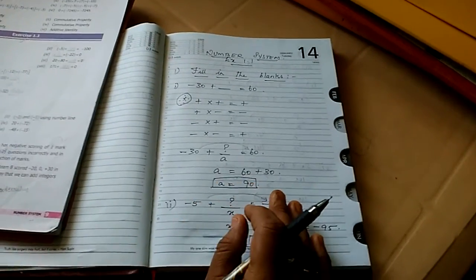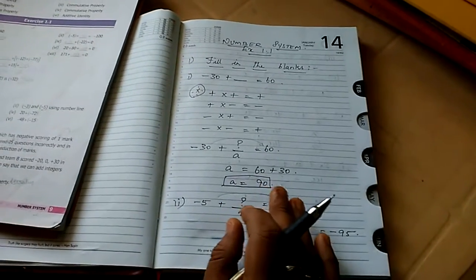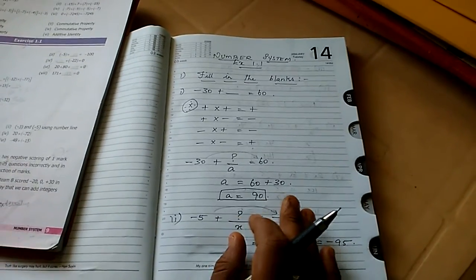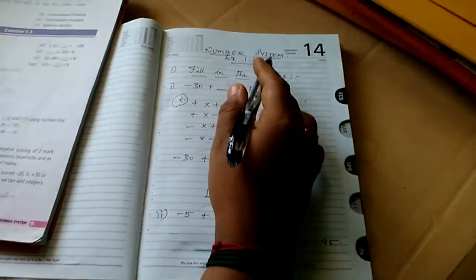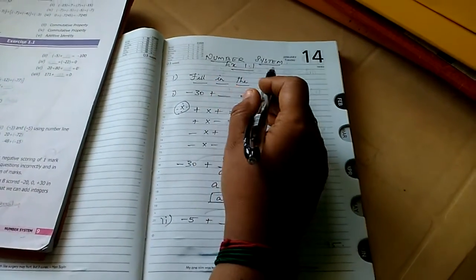Hi children, welcome to our channel. Now we are going to see the Metric syllabus, which is Class 7. So what is the first chapter they are given? Number system. What is the name of the chapter? Number system.